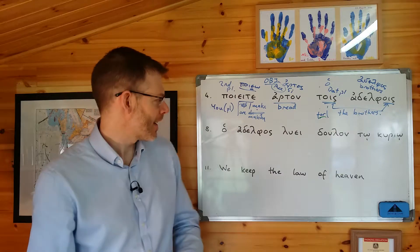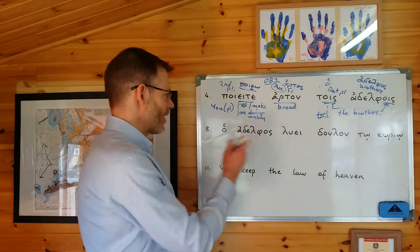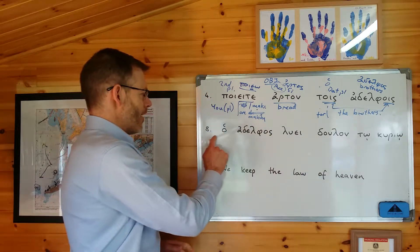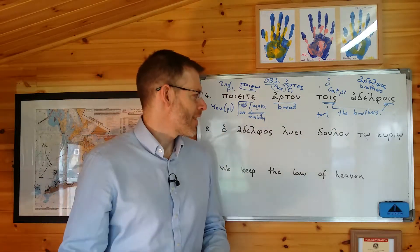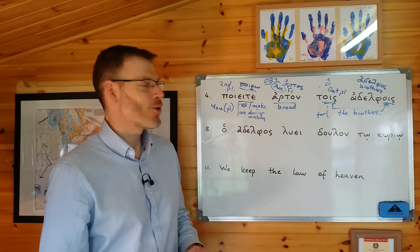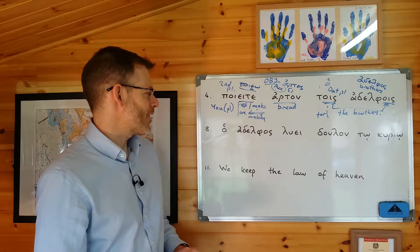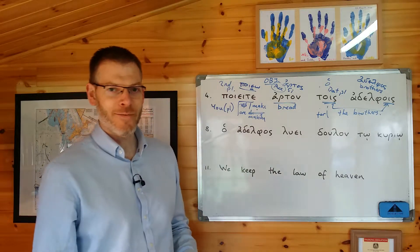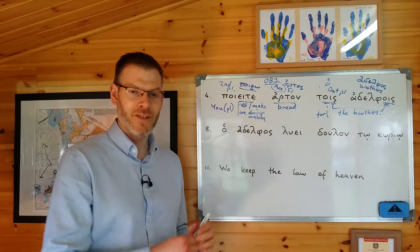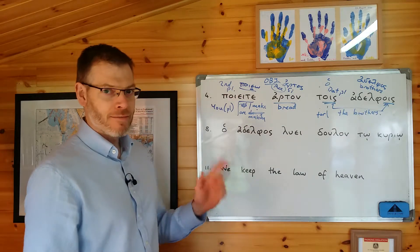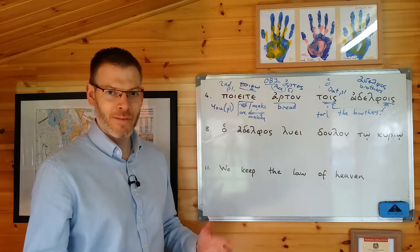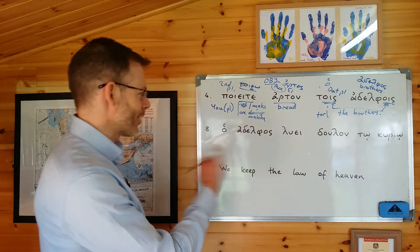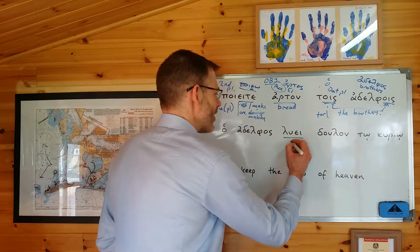Let's rock straight on and look at the next one, which is number eight. I'm going to use a different colour pen, get rid of that green so as not to confuse you. Number eight: hoi adelfoi luei dulon tō kuriō. Now, just pause the video right here and see if you can have a stab at translating this one on your own. Remember: verb, subject, object, then everything else. As I look through, I look for the verb — I find luei.